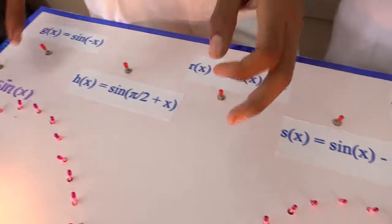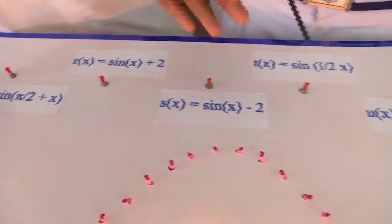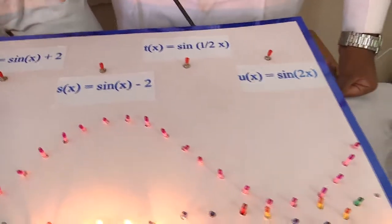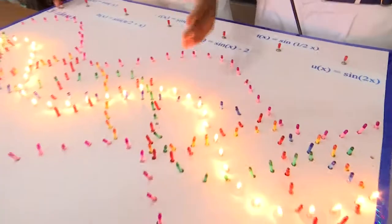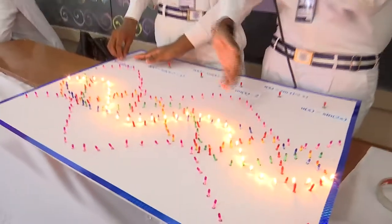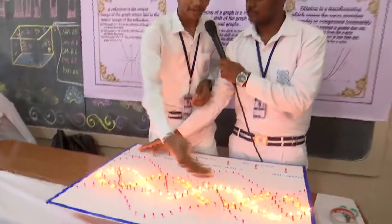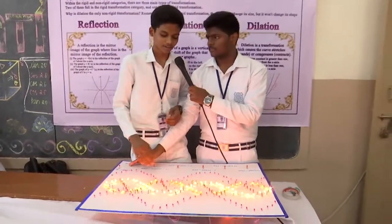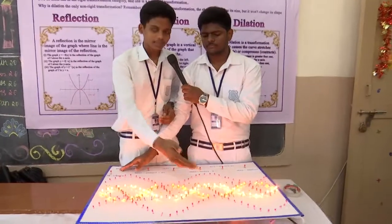For example, reflection. Reflection is the mirror image of another graph. For example, y equals sin x is the basic graph for all the graphs. y equals sin of negative x is the reflection of the other graph. Now it lies downwards.